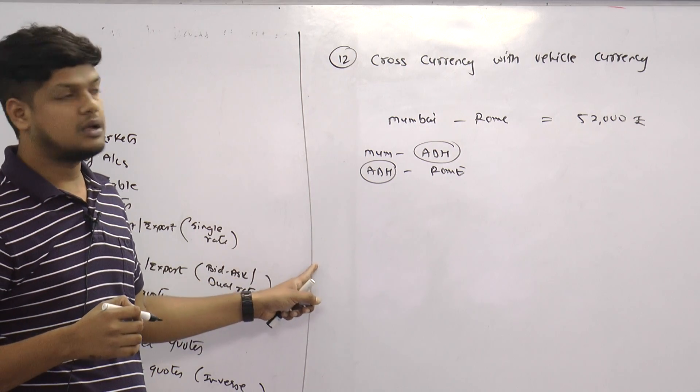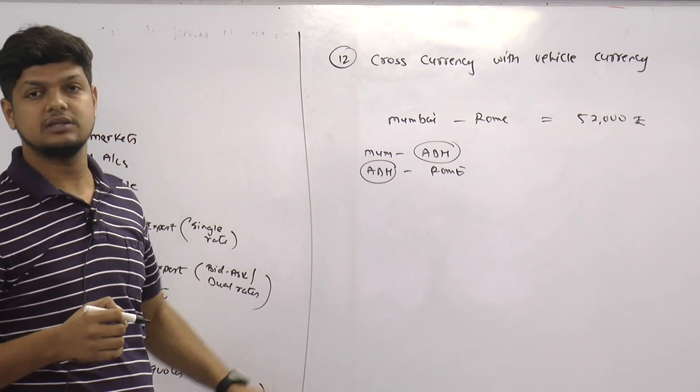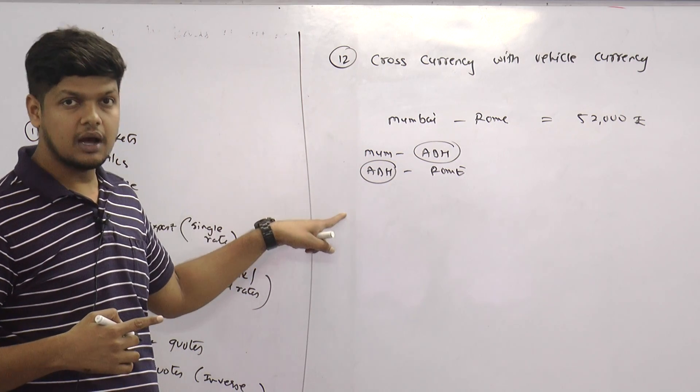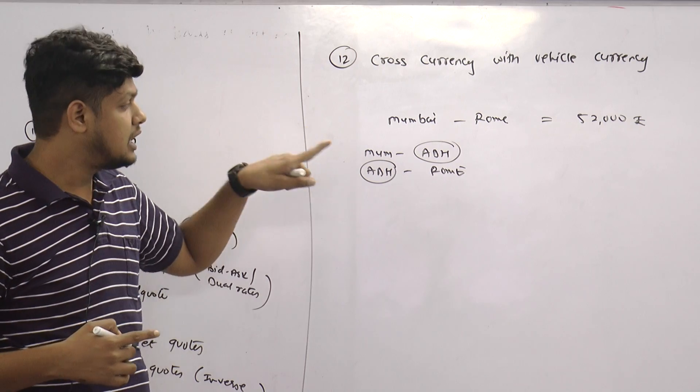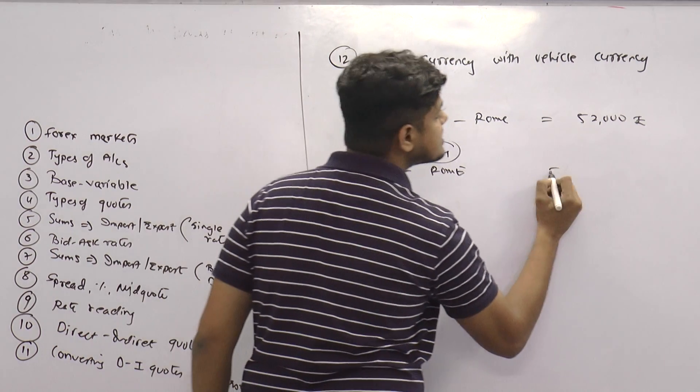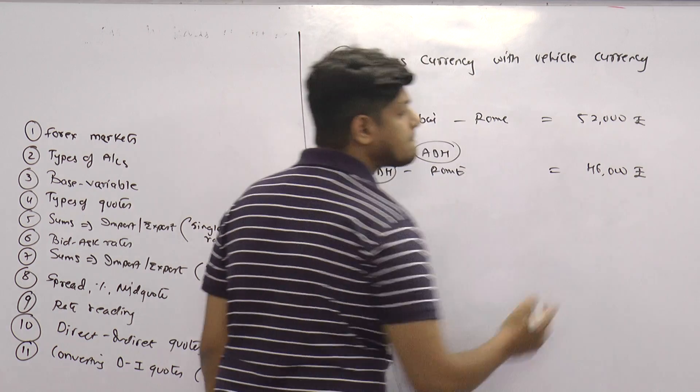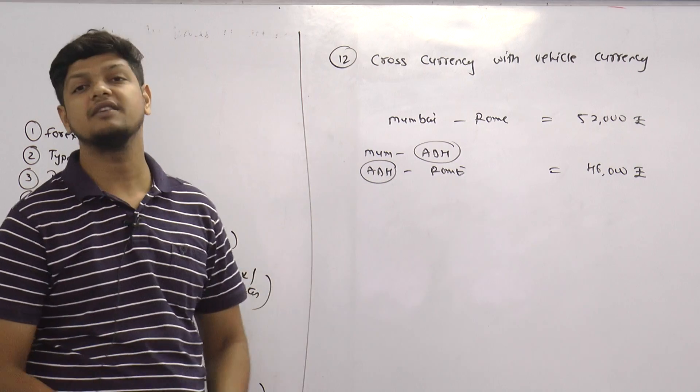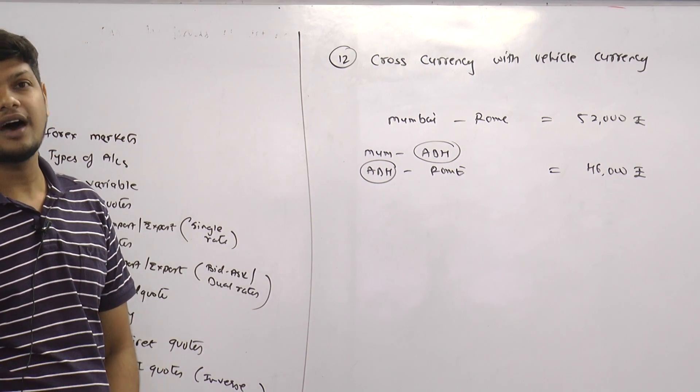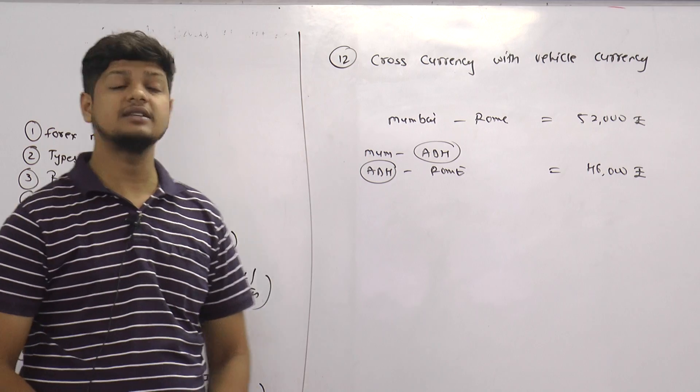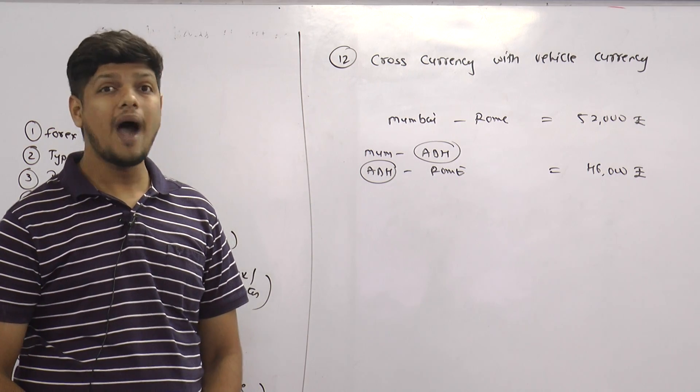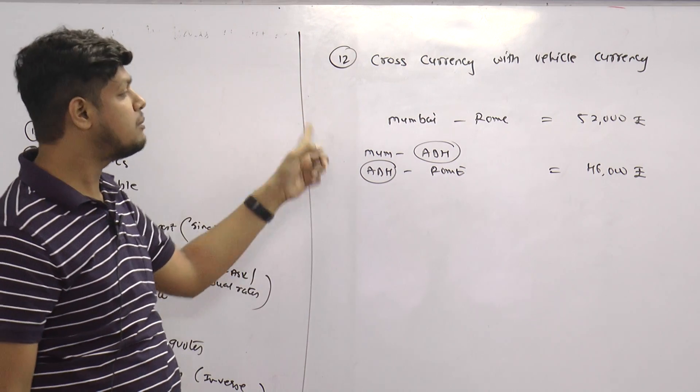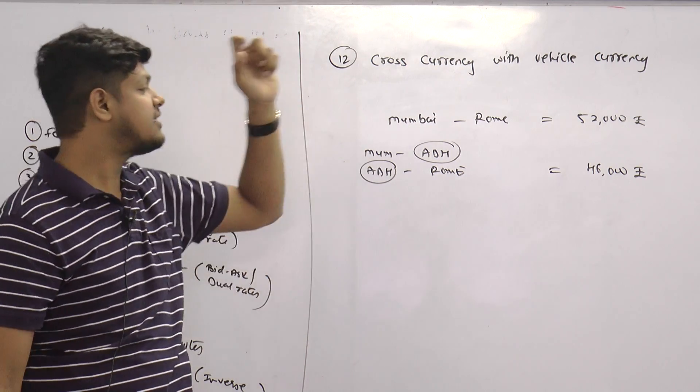What eventually happened was that the same distance was covered through a mediator, a middle connection, a middle currency or vehicle currency I would say, and the rates were 46,000. What I had to do is that I had to just get down at the middle destination and take another flight. That was simple. Hardly a layover of one hour but that saved me 6,000 rupees.